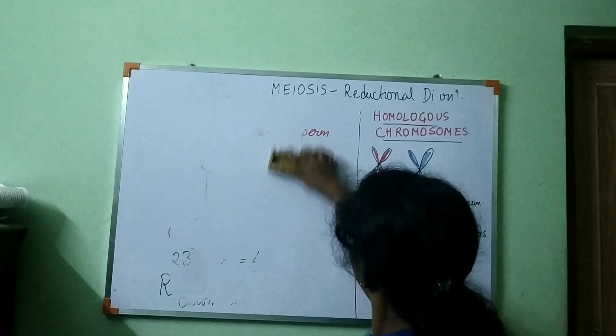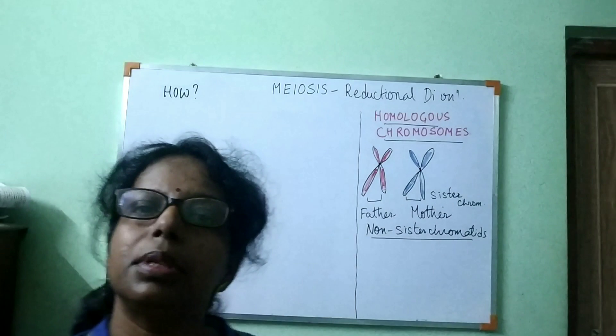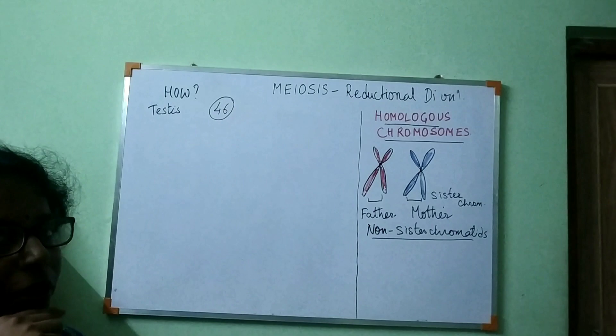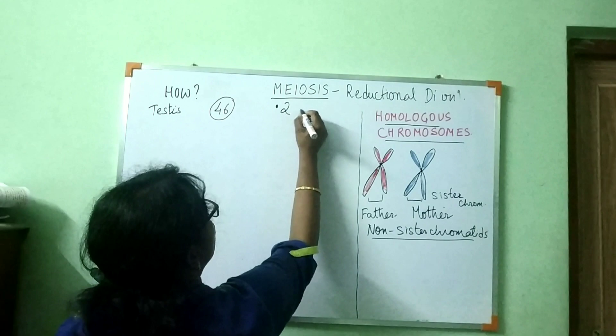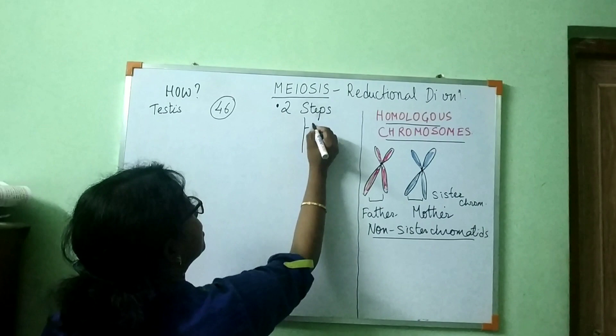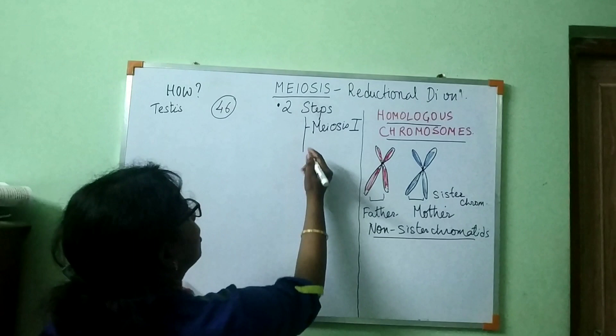Now we will see how meiosis takes place — how the chromosome number becomes half. Imagine this is the testis: one cell has 46 chromosomes. Meiosis always takes place in two steps. The first step is Meiosis I, which is known as reductional division, and the second step is Meiosis II, which is known as equational division — just like mitosis.